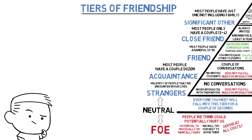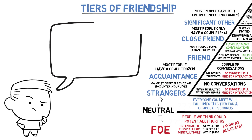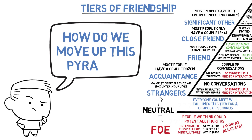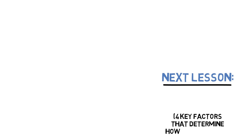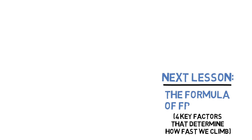Now that we've learned about the different tiers of friendship, a very important question remains: how exactly do we move up the pyramid? In order to build strong, meaningful relationships with people, we need to develop the ability to climb this pyramid as effectively as possible. Which is why in our next lesson, we're going to learn about the four key factors that determine how fast we can climb up these tiers — also known as the formula of friendship.